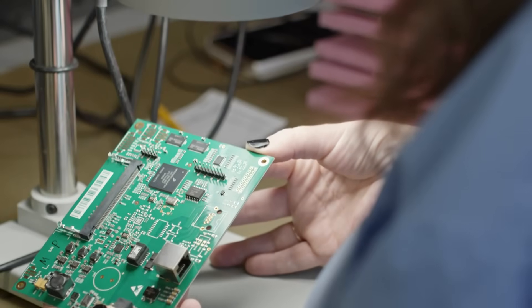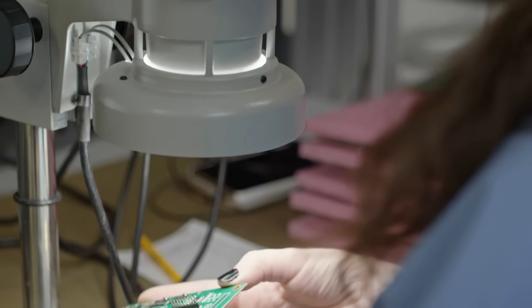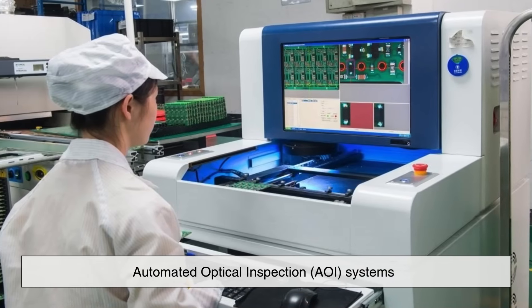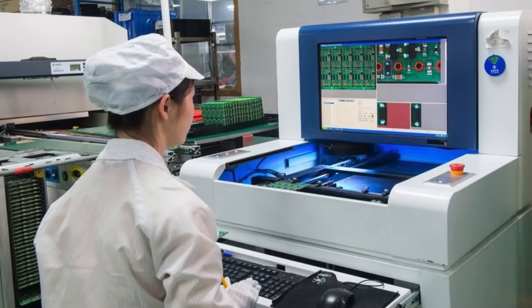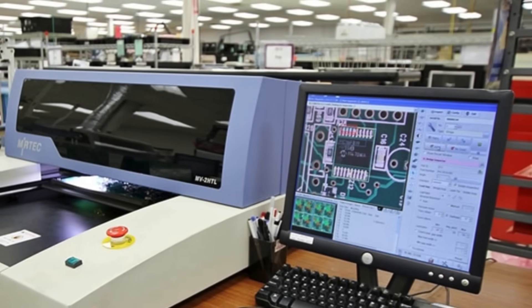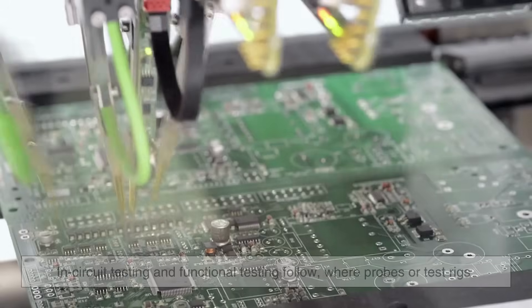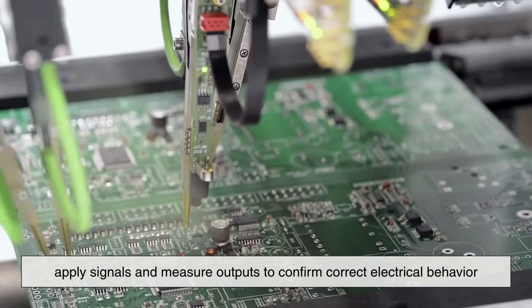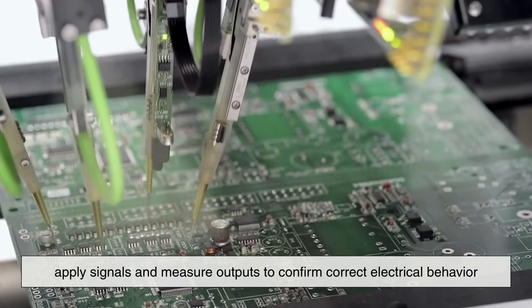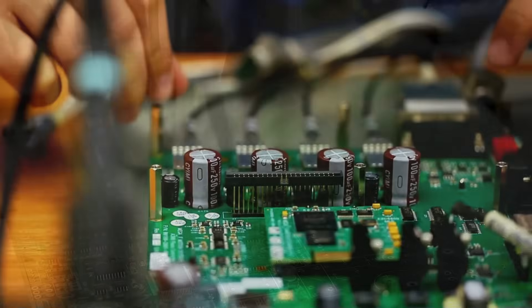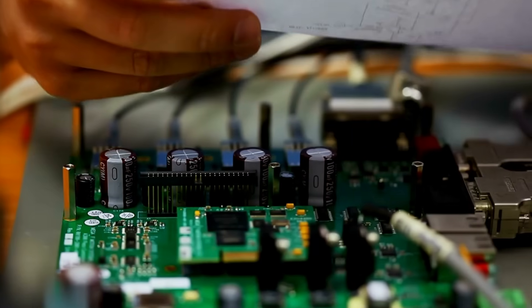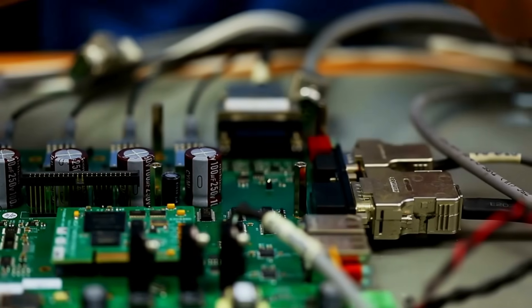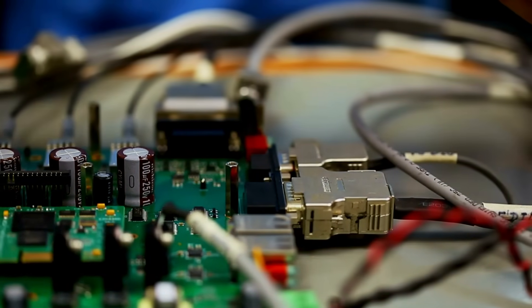After assembly, the boards are rigorously tested to ensure they work as intended. Automated Optical Inspection, or AOI, systems scan each board to check for missing or misaligned components, soldering defects, and other issues. In-circuit testing and functional testing follow, where probes or test rigs apply signals and measure outputs to confirm correct electrical behavior. Some advanced boards are even x-rayed to check for hidden defects under components like BGAs. Any faulty boards are either reworked or discarded depending on severity and cost.